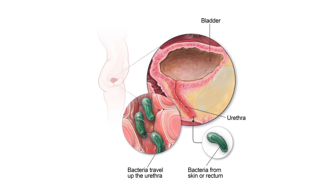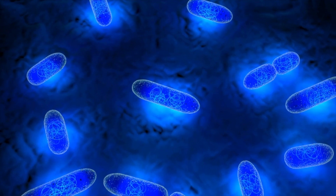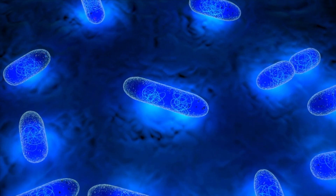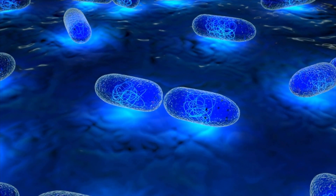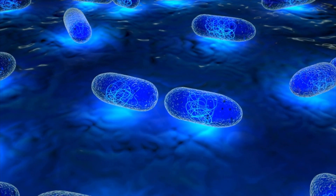The bacteria typically enter the urinary tract through the urethra, which is the tube that carries urine from the bladder to the outside of the body. In females, the urethra is relatively close to the anus, which is a common source of bacteria like E. coli.